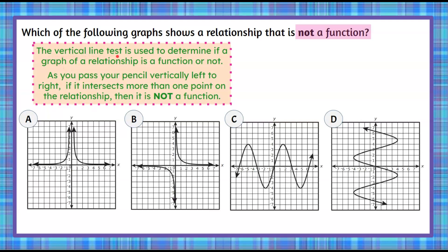We're going to use the vertical line test. The vertical line test is used to determine if the graph of a relationship is a function or not. As you pass your pencil vertically left to right, if it intersects more than one point on the relationship, then it is not a function.